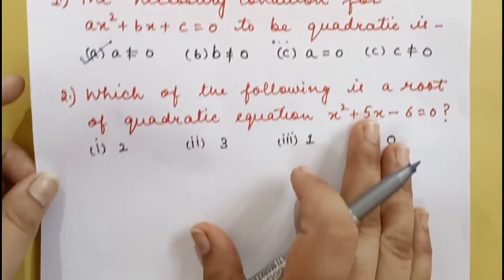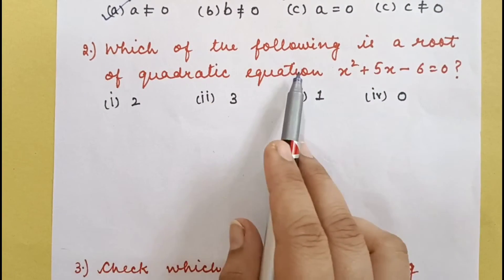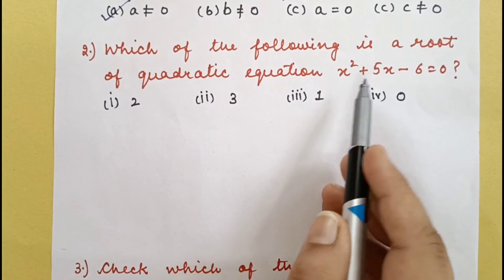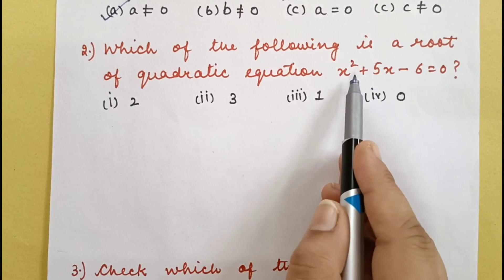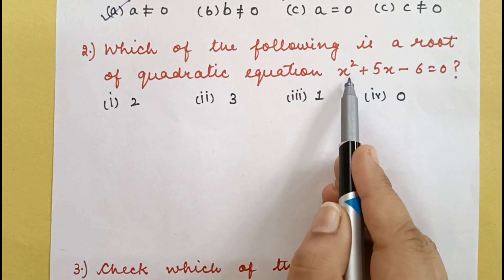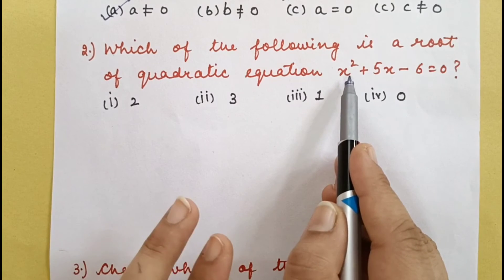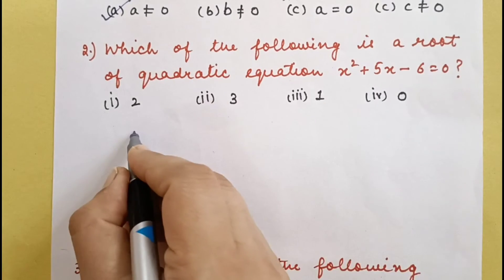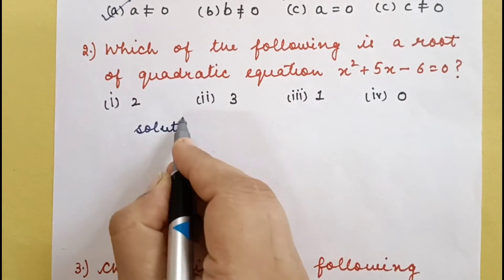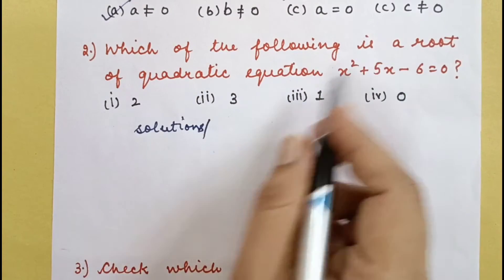Come to question number 2: Which of the following is the root of the quadratic equation? The meaning of 'root' — since x has power 2, there will be 2 answers for x, that is, 2 solutions for x. These solutions are called roots, zeros, or answers — all three mean the same thing.